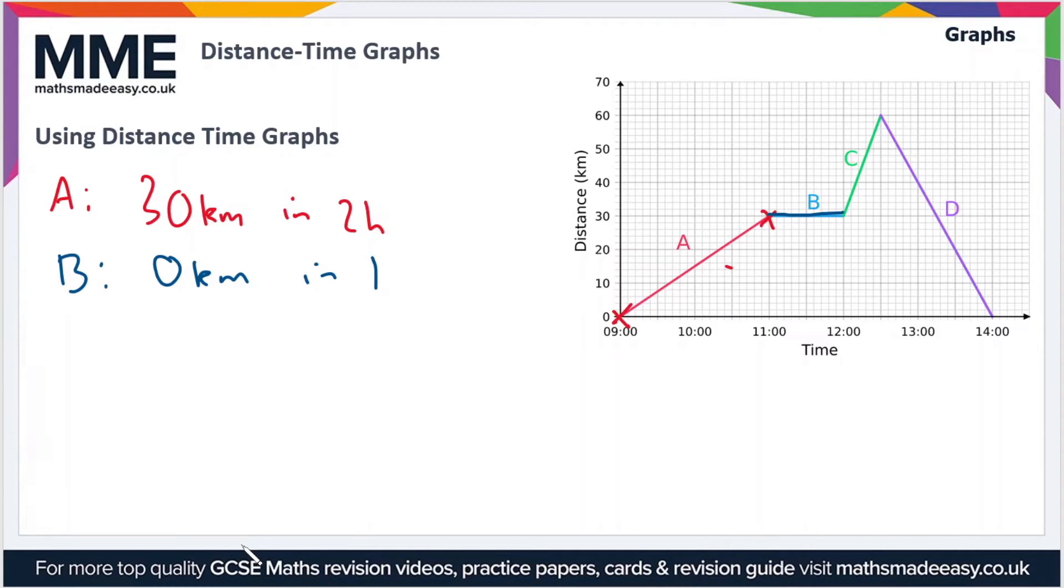If we move on to section C, we've gone from a distance of 30 kilometers to a distance of 60 kilometers, so again we've traveled 30 kilometers in that section. But this time the time span is much shorter. Here we're going across one big square and one big square represents half of an hour, so we can say that in half an hour, or 0.5 hours or 30 minutes, we've traveled 30 kilometers.